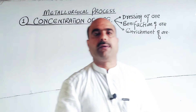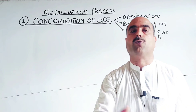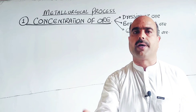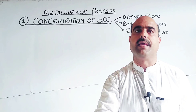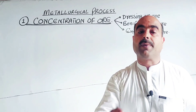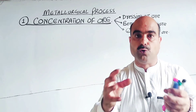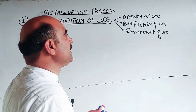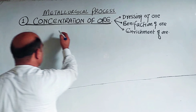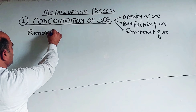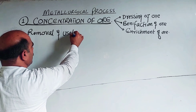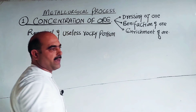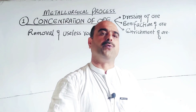The ore is obtained from rock material. There are only a few percent of pure metal or metal compound present. The rest is rocky material, earth material, soil, gang, and clay. These useless materials need to be removed. The enrichment of ore is the removal of the useless rocky portion, known as the gangue.